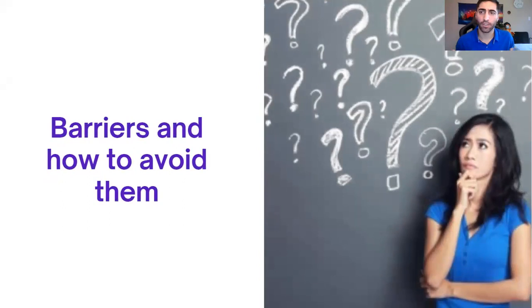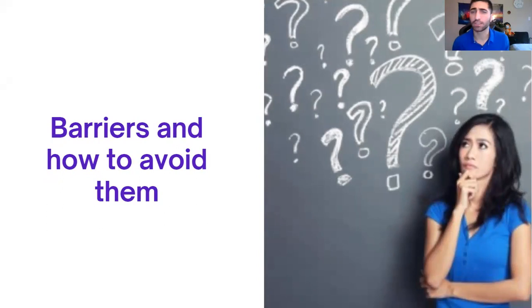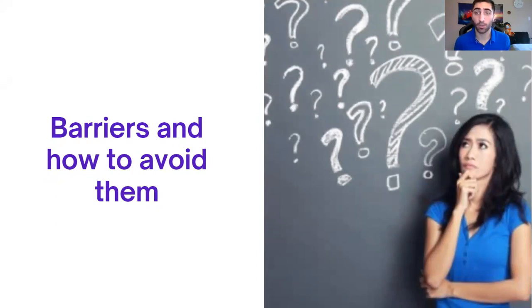To begin with, every training program will always have barriers, and a successful training manager should be able to anticipate and avoid them. In this case, the main barrier was the negative attitude of the participants, as they had previous bad experience with the system. The instructor should have avoided this problem by confronting and contacting these participants, addressing the situation, explaining how the system is different, and being open and able to resolve any problems before starting the training session.